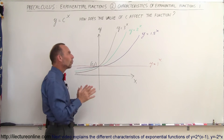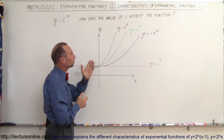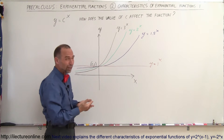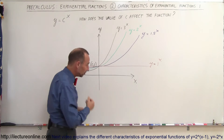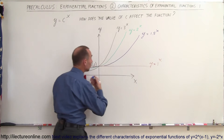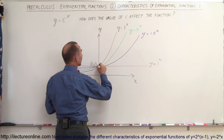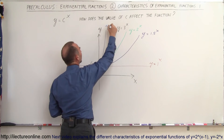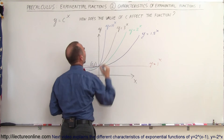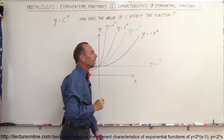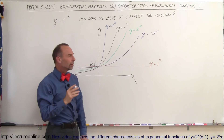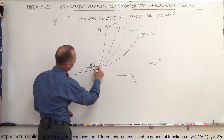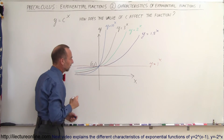What if the value for the constant gets bigger — for example, 10? y equals 10 to the x power means the function will grow much more quickly, and would look a lot more like this — y equals 10 to the x power. And of course, coming the other way, you can see it goes down to 0 much quicker.